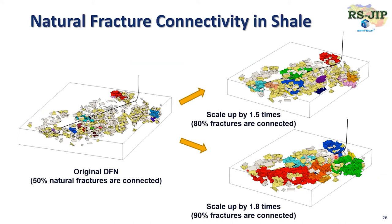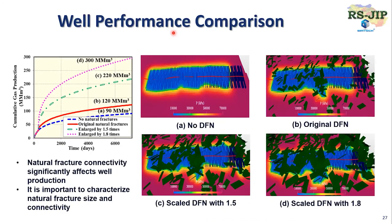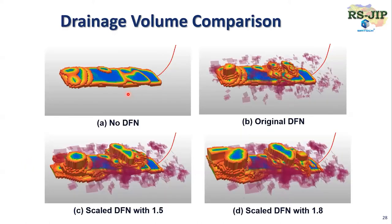We wanted to know what the well performance difference is if you have different connectivity. Many operators say they have similar well drilling and similar well completion, but well performance is different — I think maybe the natural fracture connectivity is different. This slide shows the comparison of well performance for four different scenarios: original natural fractures, 1.5x increase, and 1.8x increase. You can see that natural fracture connectivity increases well production significantly. So it's very important to characterize the natural fracture size and connectivity. We also have better drainage volume visualization to give clear understanding of complex fracture impact on well drainage.